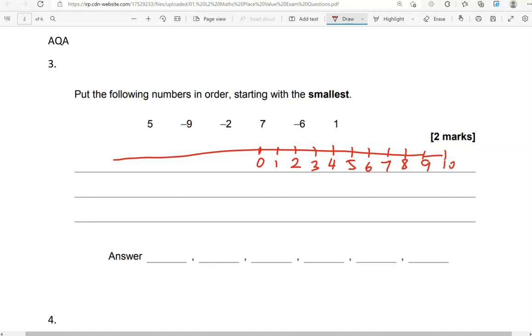And on the other side, you're going to have negative numbers like this. And I'll stop there as well. So let's just circle these numbers. 5 is here. We've got negative 9, which is here. Negative 2, we've got 7, negative 6, and 1.